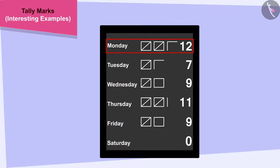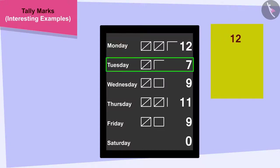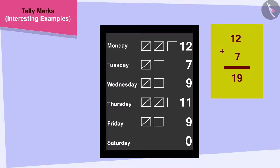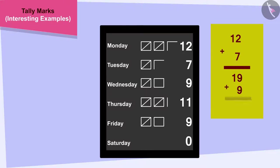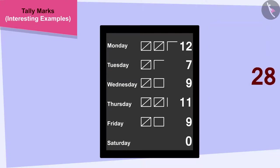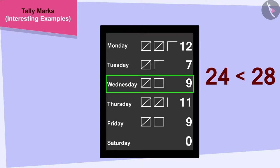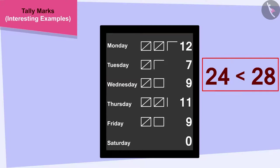12 hours of work was completed by the end of Monday. By the end of Tuesday, 12 plus 7 — 19 hours of work was completed. By the end of Wednesday, 19 plus 9 — 28 hours of work was completed. Since 28 is more than 24, by the end of Wednesday more than half of the total hours of work had been completed. This means the day Raju is talking about is Wednesday.